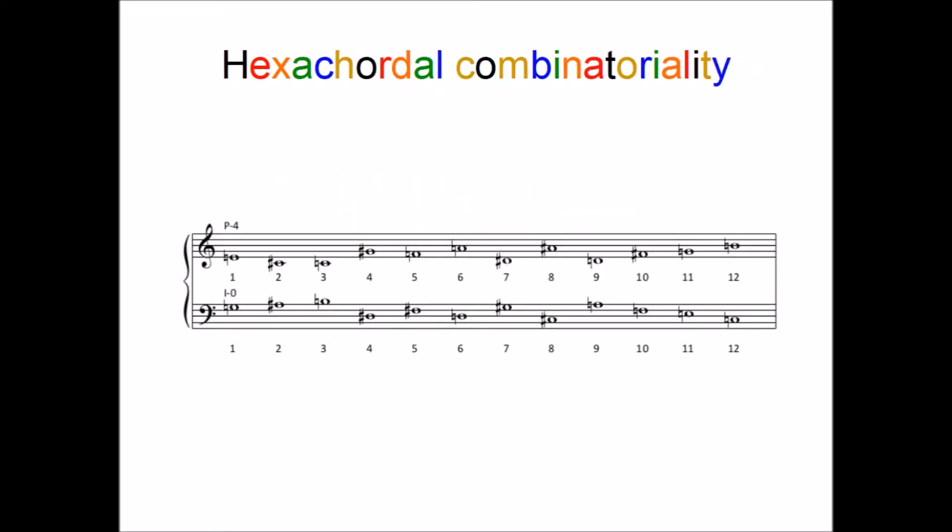If you look at the following example, you will notice there are two transformations of a 12-tone row. Look closely at the first hexachord of each voice. They both combine to create an aggregate. The same happens with the last hexachord of each voice.